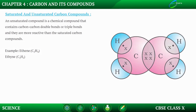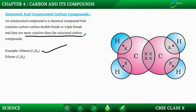Now the next topic is unsaturated compounds. Unsaturated compounds have double or triple bonds in them, and one of the most popular examples is ethene. One thing to keep in mind is that double and triple bonds are more reactive than single bonds, so unsaturated compounds are more reactive than saturated compounds.